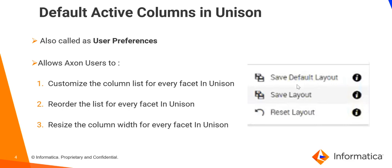It includes the following three new options available in the unison grid: first, save default layout; second, save layout; and third, reset layout. Now let's discuss each of these options one by one.